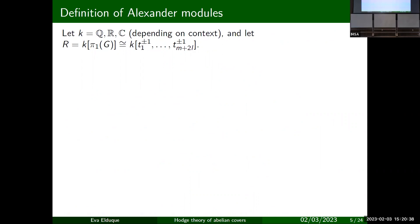Let me define Alexander modules. I'm going to fix the field — mostly the rationals or the reals, with the strongest statements over the rationals. R is going to denote the group ring over the fundamental group of the semi-abelian variety, which — since the fundamental group is free abelian of rank k plus 2L — is isomorphic to a Laurent polynomial ring in that many variables. But this isomorphism is not canonical.